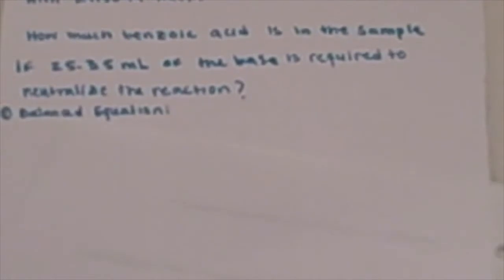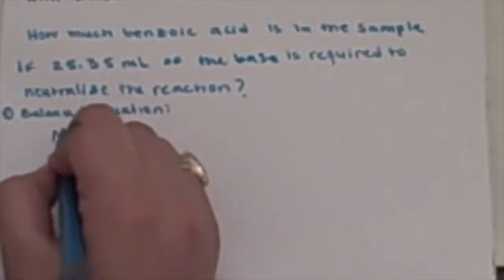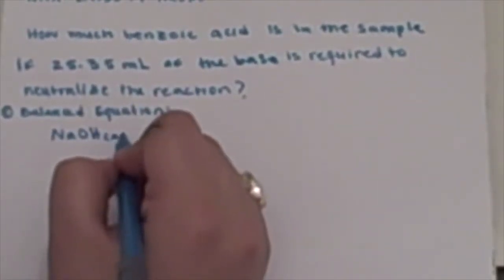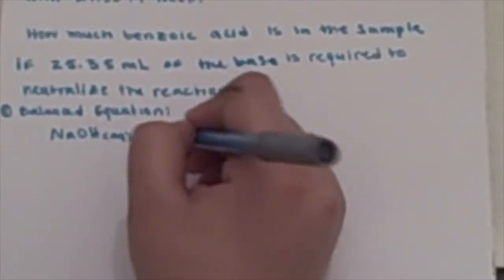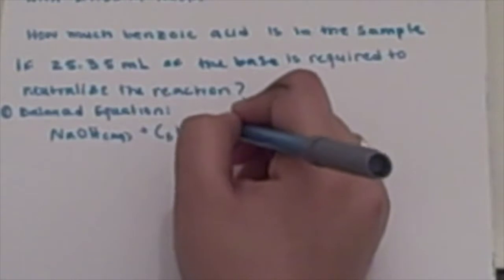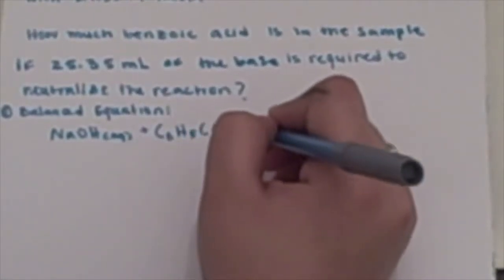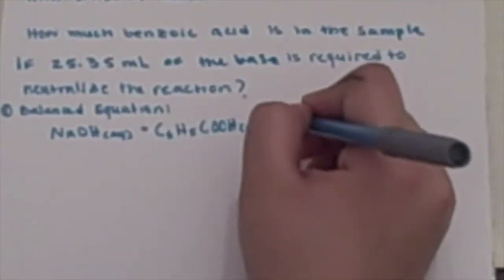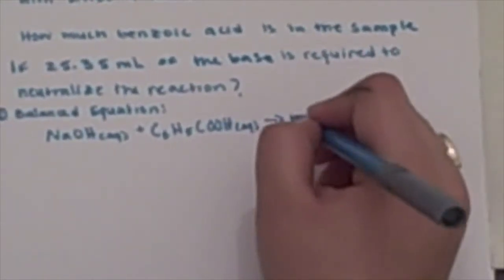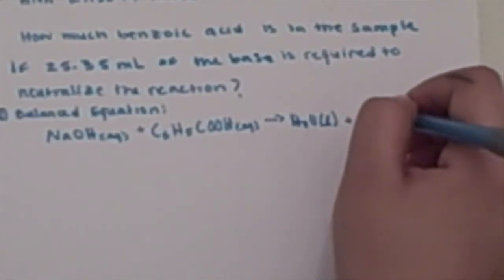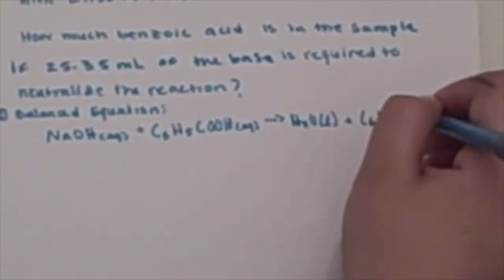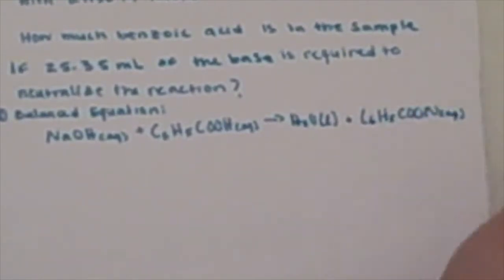So they give us a bit of information. Let's start by first balancing our equation. We have NaOH aqueous added to our benzoic acid, which is C6H5COOH, which is also aqueous. When we react these together, we should form H2O liquid and C6H5COONa aqueous.